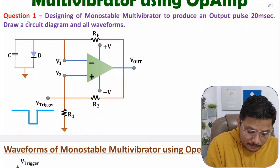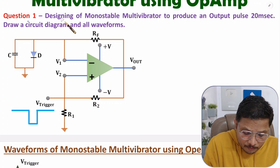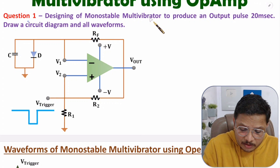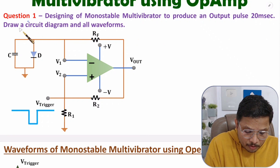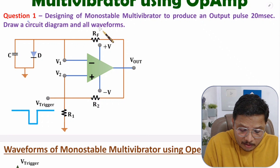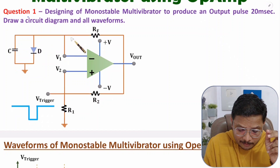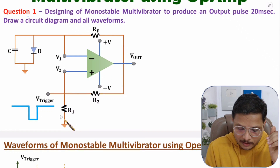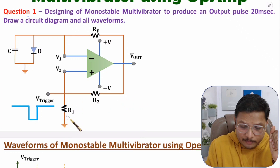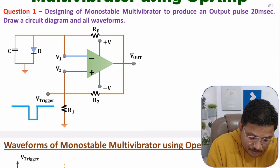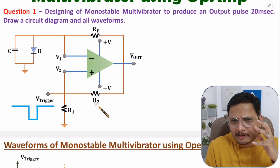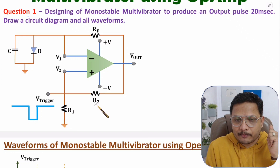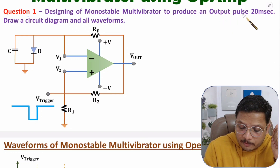In the first question, what is given? We have been given with designing of a monostable multivibrator which will produce an output pulse of width of 20 milliseconds, and here we need to draw the circuit as well as the waveforms. This circuit I have already covered in my last video, so I am directly taking this circuit from it. Here I will explain how to identify values of the components — what is the value of C, what is the value of RF, what is the value of R1 and R2.